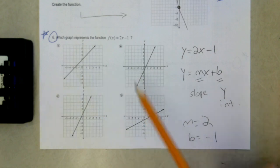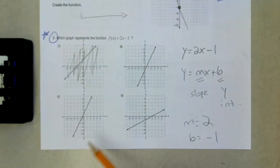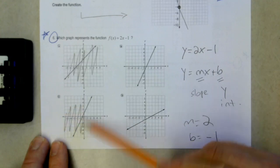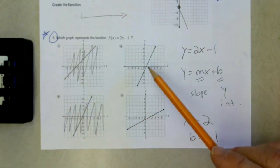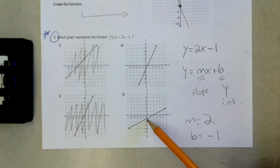So I want to look at these lines, which ones have a y-intercept of negative 1? Well, not a. Let's see. Not c. So b has a y-intercept of negative 1, and d has a y-intercept of negative 1. Now we just have to look at the slope.